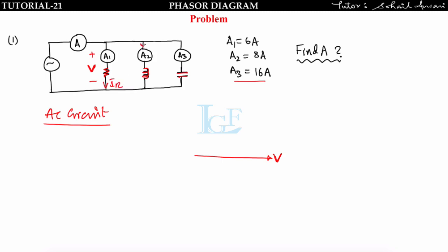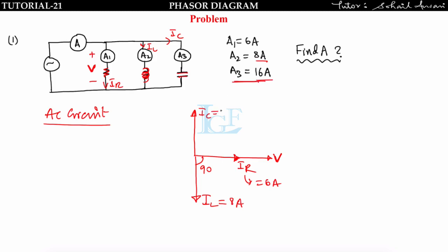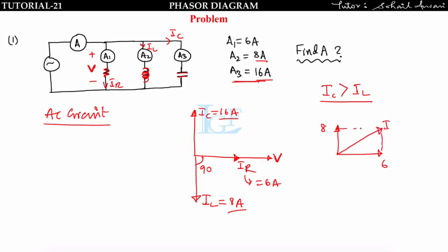Taking voltage V as reference and drawing the phasor diagram: Ir = 6 A (in phase), Il = 8 A (lags 90°), Ic = 16 A (leads 90°). Since Ic > Il, the net reactive component is Ic − Il = 16 − 8 = 8 A upward. The net current = √(8² + 6²) = √(64 + 36) = √100 = 10 A.